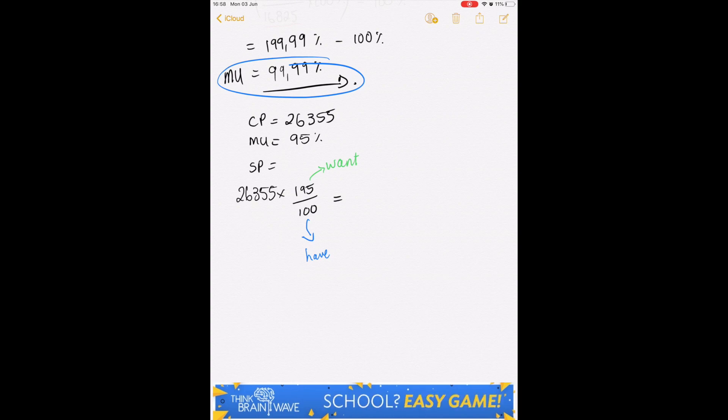What we want is always the percentage that we are marking up plus 100. So we have 195 over 100. This gives us an answer of 51,392.25. Easy game.